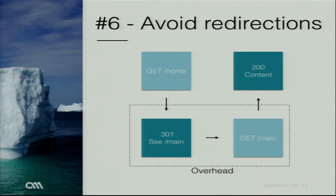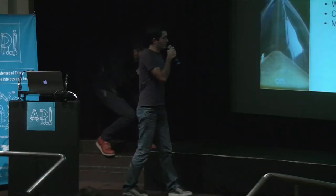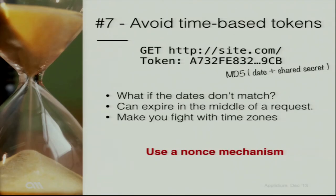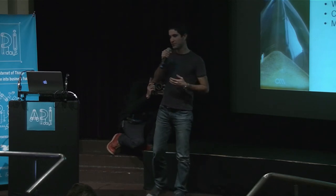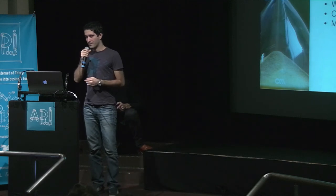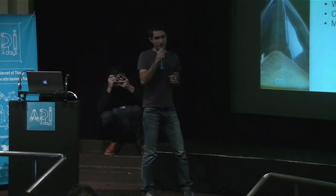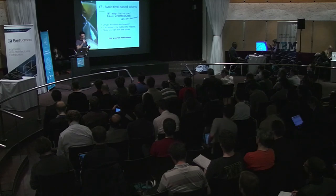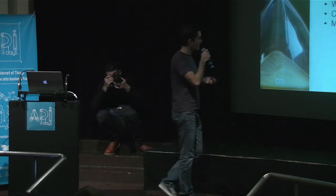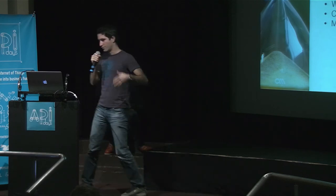Here is my last recommendation. This one is a bit weird, but we've seen it more often than we should: you should avoid time-based tokens or, in general, anything time-based. We had tons of issues with this. The biggest issue was that most mobile devices aren't properly configured and their time is off — sometimes by five minutes, sometimes by five years. So it's not reliable. Really avoid doing anything time-based. If you want to prevent replaying requests, use a nonce mechanism like there is in OAuth.